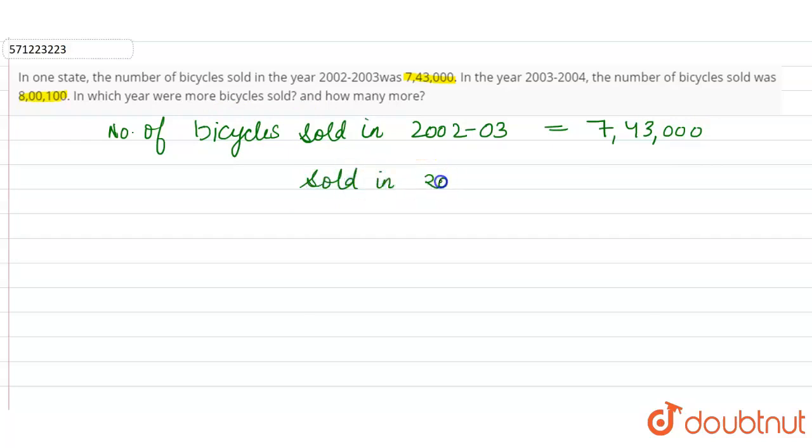It is clear that 8,00,100 is more than 7,43,000. So in which year were more bicycles sold? The answer of part (a) is 2003-04 because 8,00,100 is greater than 7,43,000.